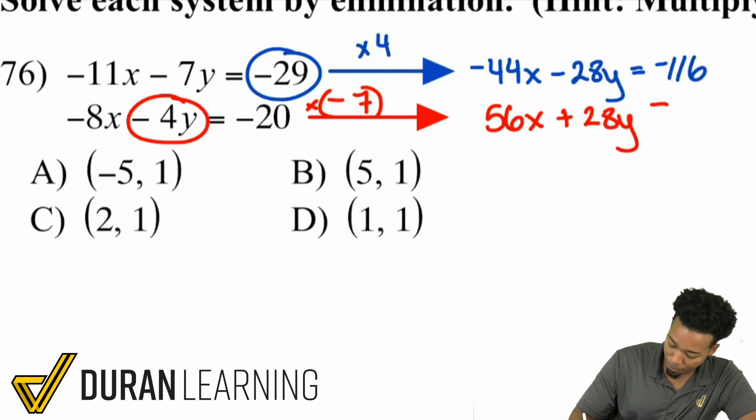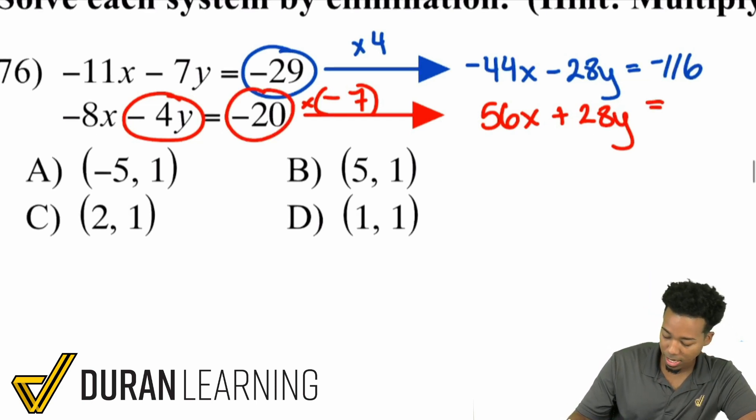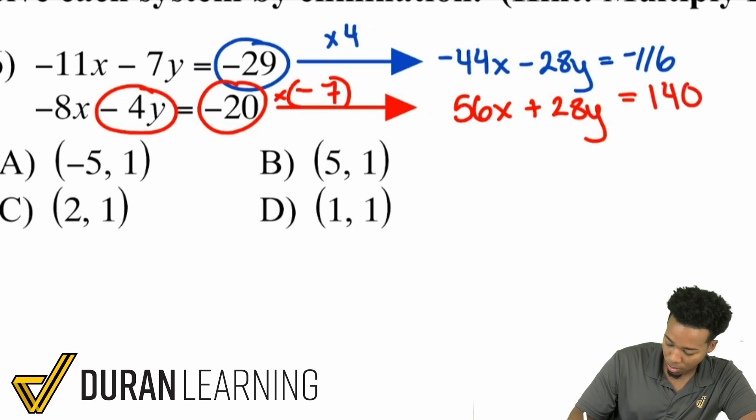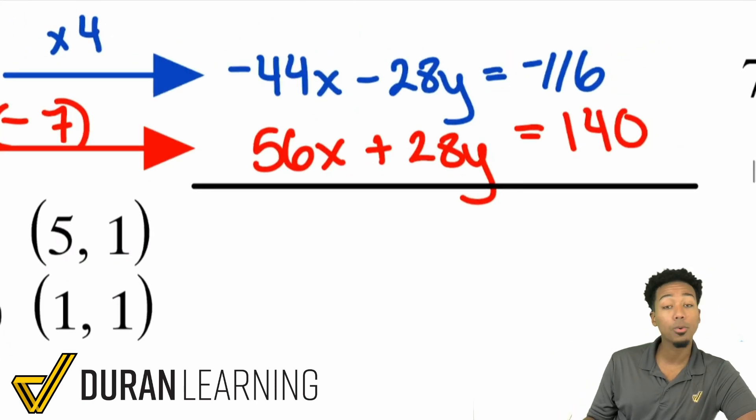So here, booyah! And then negative 20 times negative 7 is a positive 140. Now we've given ourselves the opportunity to line up the variables with the same coefficients, and now we're good. We can eliminate and we can have ourselves a good time.